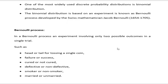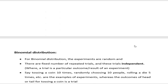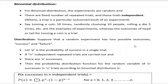Let us go into detail for binomial distribution. In binomial distribution, the experiments will be random, there are a fixed number of repeated trials, and these trials will be independent. A trial is a particular outcome or result of an experiment. For example, tossing a coin 10 times, randomly choosing 10 people, or rolling a die 5 times are examples of experiments. The outcome of a single coin toss — head or tail — is a trial.